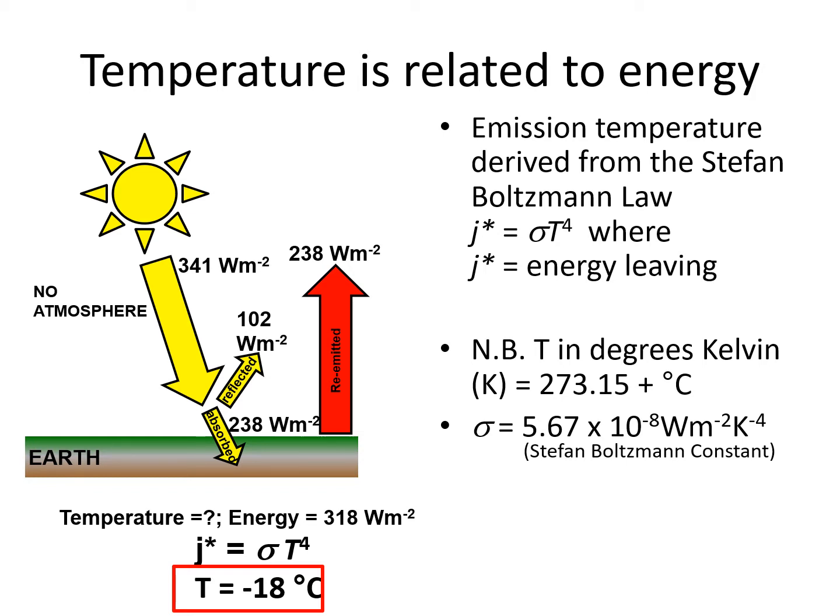On the left is a diagram showing a simple Earth with no atmosphere. The Earth receives 341 watts per meter squared from the sun, but about 30% is reflected back into space. 30% of 341 watts per meter squared is 102 watts per meter squared. So the Earth absorbs 238 watts per meter squared. The amount of energy absorbed by the Earth must equal the amount of energy emitted, so 238 watts per meter squared are emitted. We can calculate temperature using Stefan Boltzmann's law shown here.